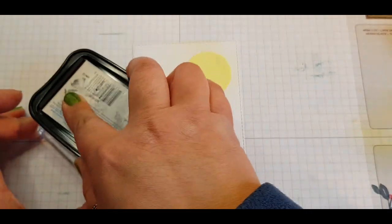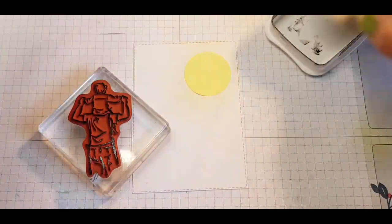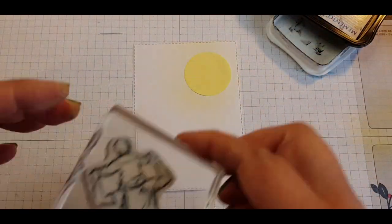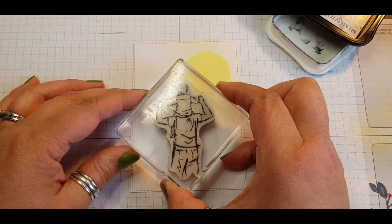Using black Memento ink I'm stamping this image with the child sitting on the, I'm guessing it's a father, father's shoulders.